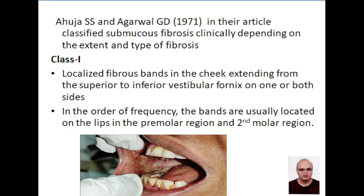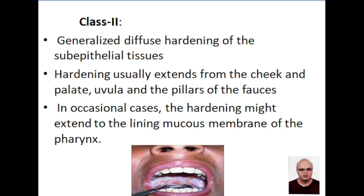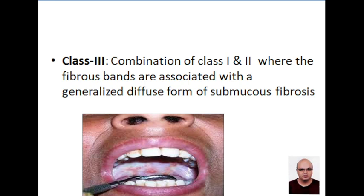Bohuja and Agarwal classified OSMF into three classes. In class one, localized fibrous bands in the cheek are seen, extending from the superior to inferior vestibular fornix on one or both sides; these bands are usually located in the lips, and the second molar region is always involved. In class two, generalized diffuse hardening of sub-epithelial tissues is seen, extending up to the palate, uvula, and sometimes to the pillar of the fauces; very rarely, hardening may extend to the pharyngeal lining mucosa.